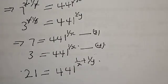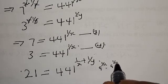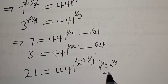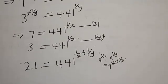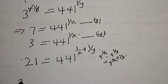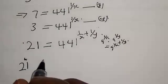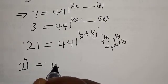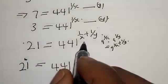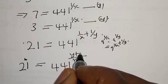That is, 441 raised to power 1 over x multiplied by 441 raised to power 1 over y is the same thing as 441 raised to power 1 over x plus 1 over y. Now, 1 over x plus 1 over y equals y plus x over xy, which is the same as xy over x plus y in the exponent position.